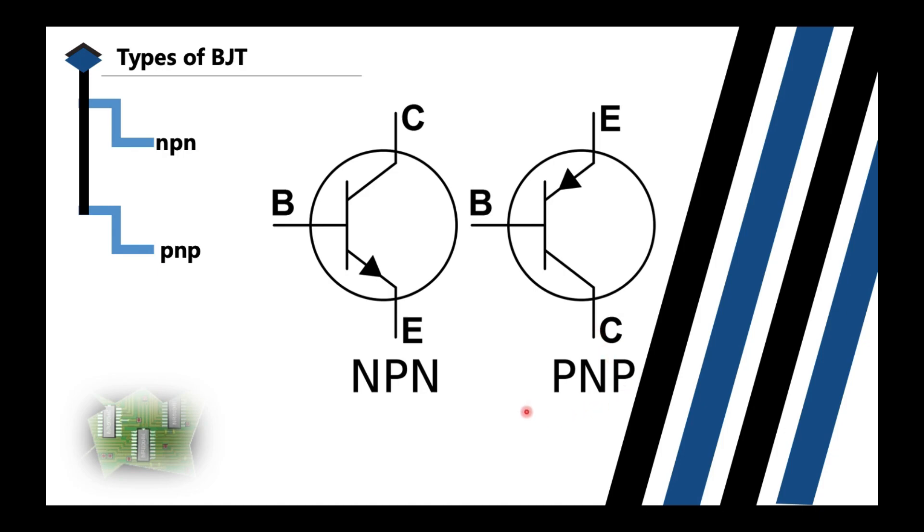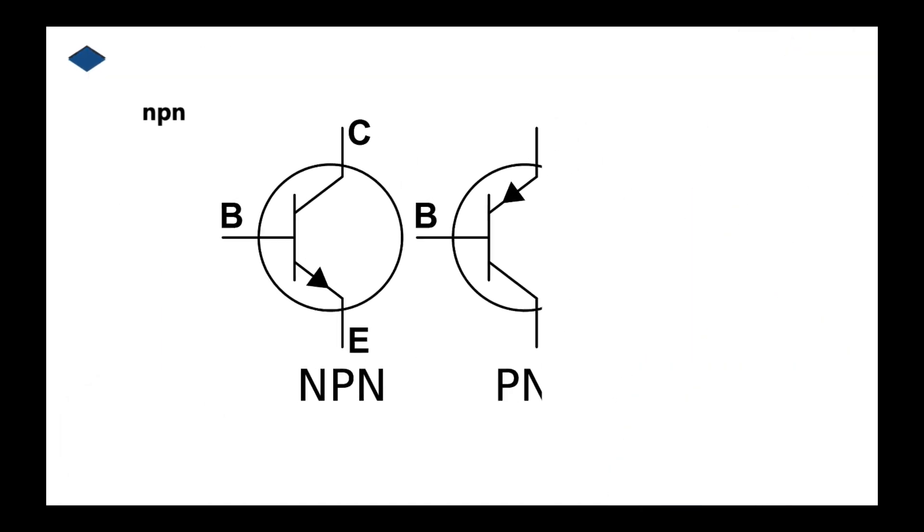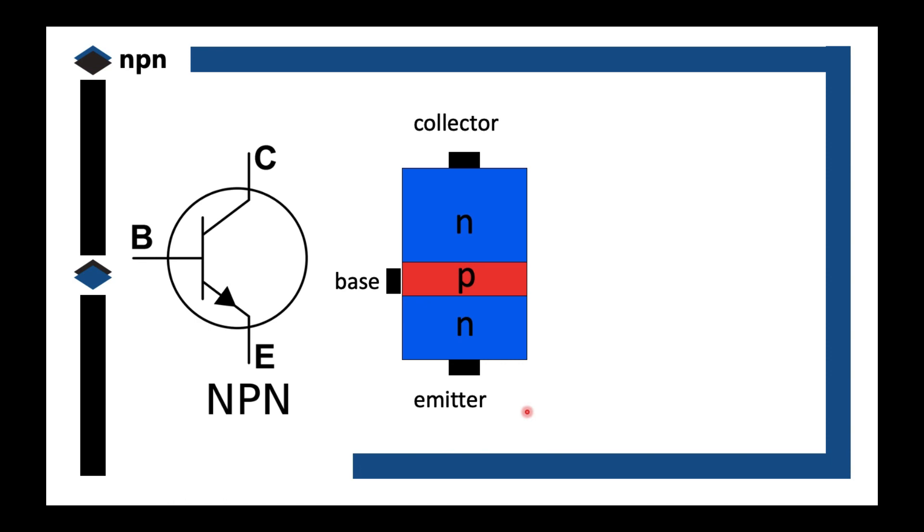The two types of BJT. So let's look at the construction of an NPN BJT. An NPN BJT is formed when you join two N-type and in the middle there's the P-type.